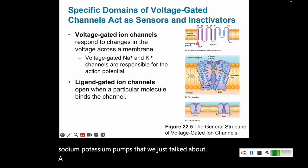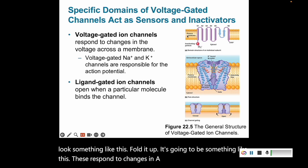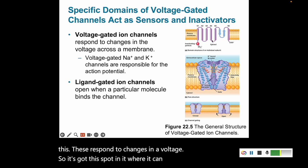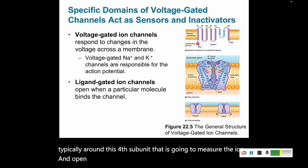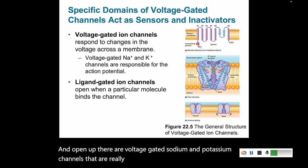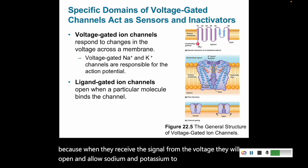A voltage-gated ion channel, if you were to draw it out and fold it up, would look something like this. It responds to changes in voltage — it has a spot, typically around the fourth subunit, that measures the ion and opens up. Voltage-gated sodium and potassium channels are really important in creating the action potential, because when they receive the signal from the voltage, they open and allow sodium and potassium to flow, maintaining and propagating the voltage.